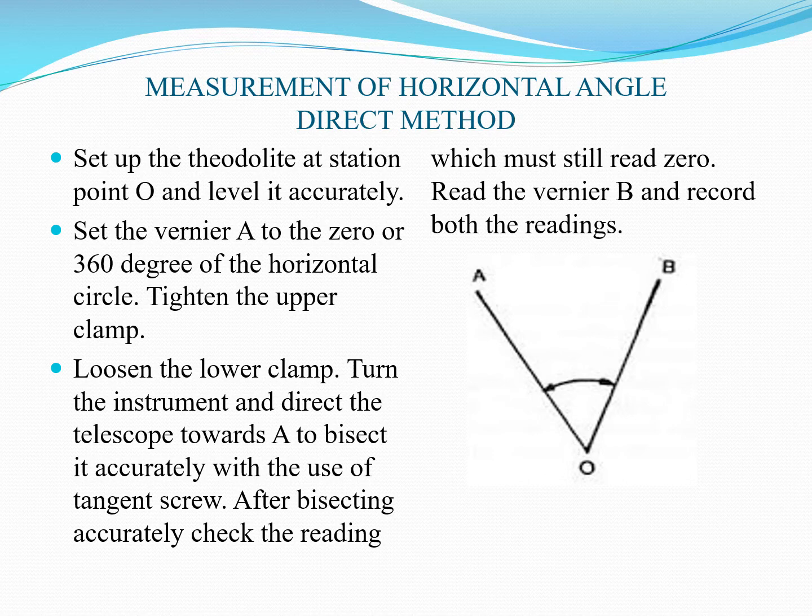Using the horizontal tangent screws, bisect the ranging rod at A accurately. After bisecting accurately, check the reading — it must remain zero. Then read vernier B and record both initial readings after bisecting the ranging rod at A.